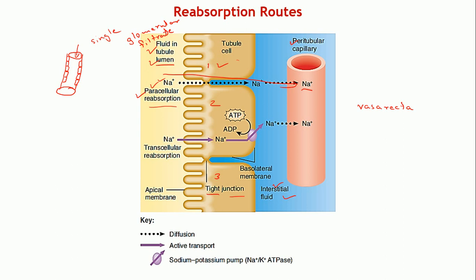The second process is transcellular reabsorption. This involves the apical membrane — facing the lumen — and the basolateral membrane — facing the interstitial fluid. Transporters in the apical membrane help ions cross into the tubular cell. For example, sodium enters the tubular cell from the lumen by active transport, requiring energy and transporters.